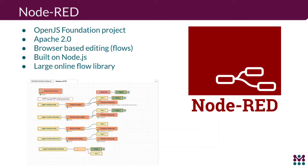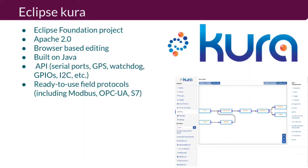A similar tool from the Eclipse Foundation is Eclipse Kura, also Apache 2.0, with browser-based editing but built on Java. It has built-in APIs for serial ports, watchdogs, GPS, and GPIOs to support connected sensors. It also provides ready-to-use field protocols like Modbus — a very common communication interface — and supports integration with cloud vendors like GCP IoT Core.